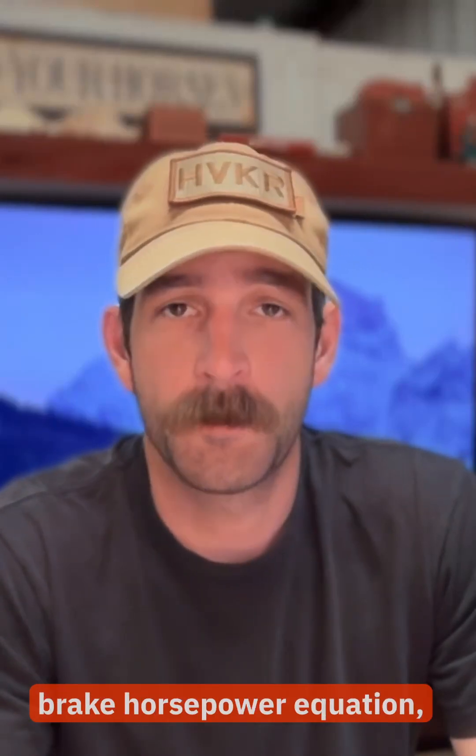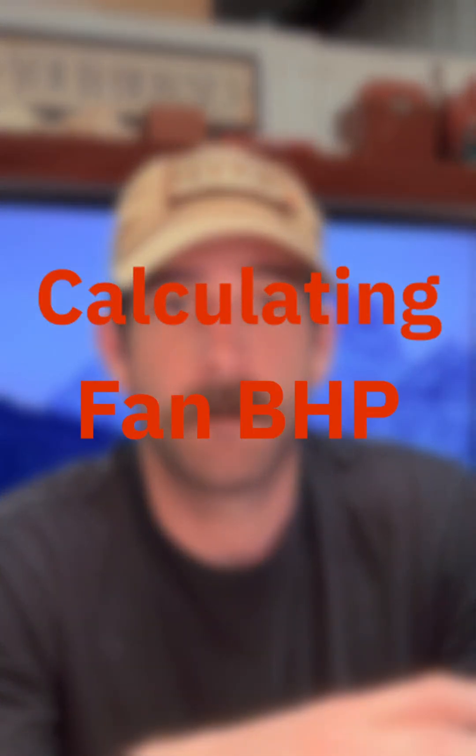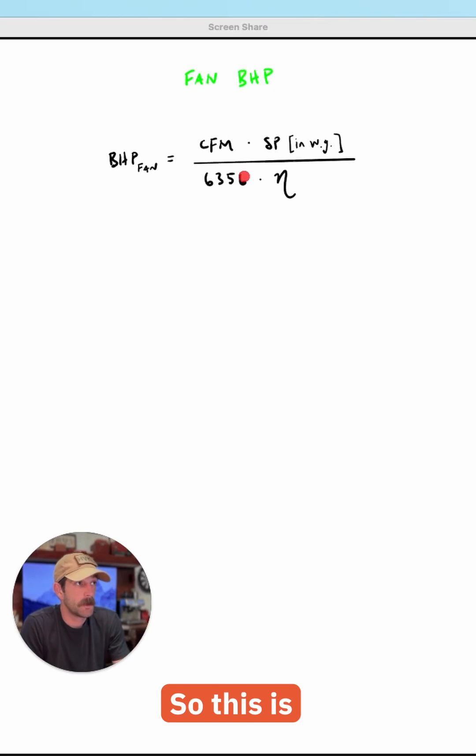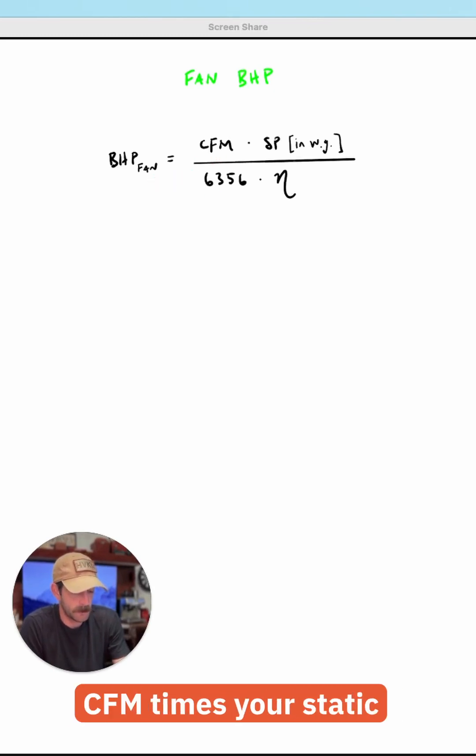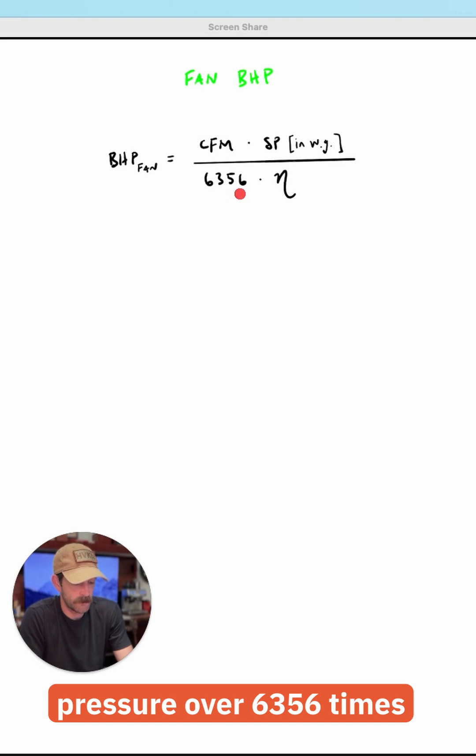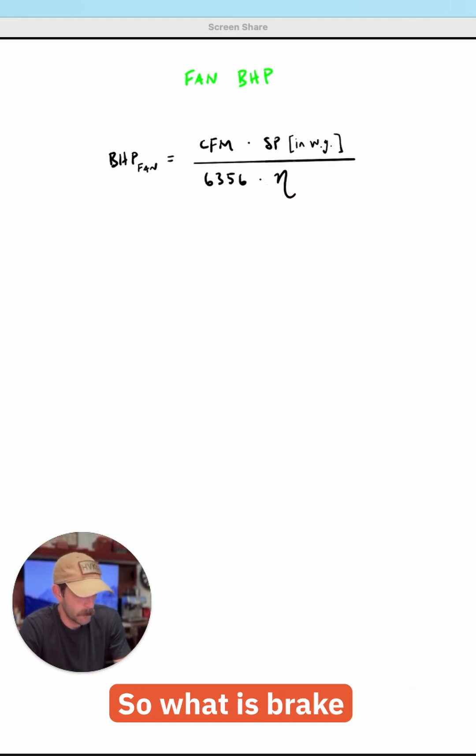I'm going to walk through the fan brake horsepower equation, explain what it means, and demonstrate a couple ways to use it. So this is the equation right here. Brake horsepower of the fan is equal to your CFM times your static pressure over 6356 times efficiency.